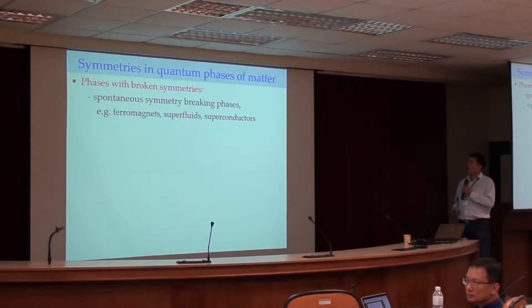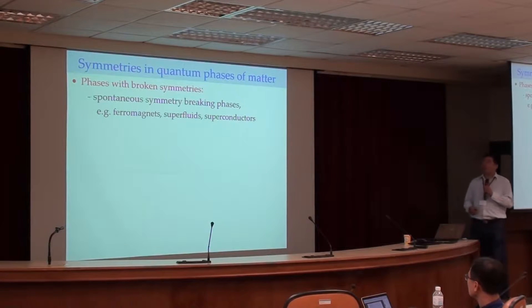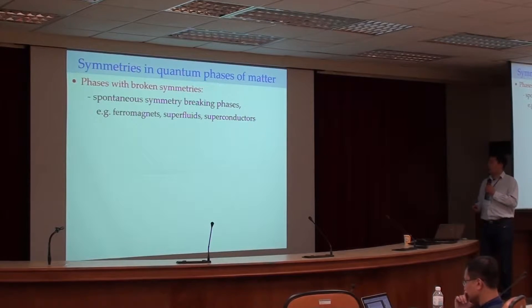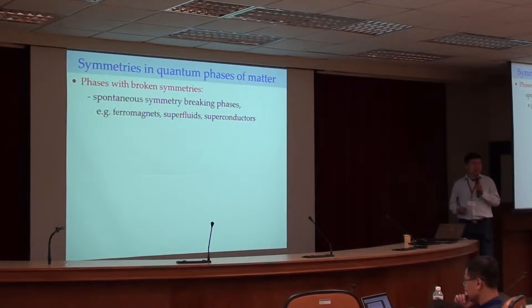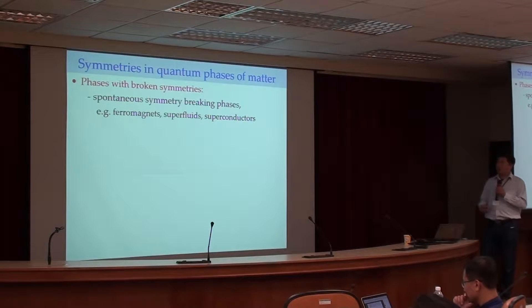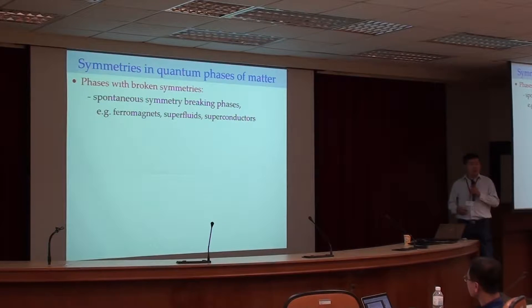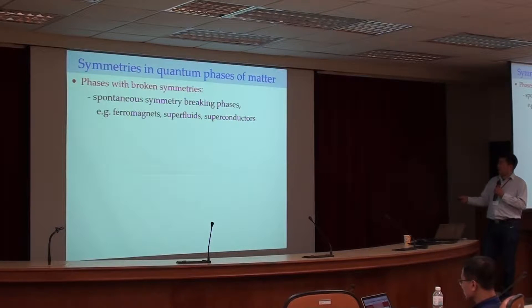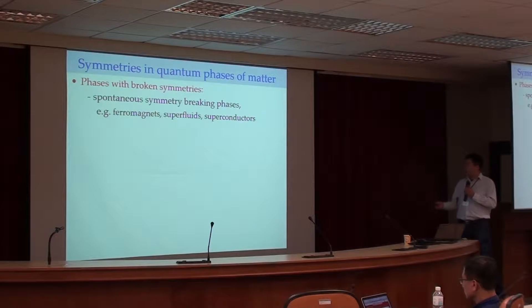As we all know, symmetry plays a really important role in defining and categorizing phases of matter in both condensed matter and cold atomic systems. For conventional states of matter, they have broken symmetries. For instance, ferromagnets break spin rotational symmetry and time-reversal symmetry. Superfluids and superconductors break gauge symmetry or particle number conservation symmetry. These are conventional states of matter categorized by broken symmetries.